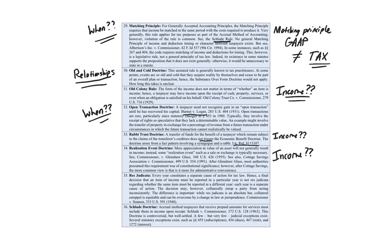Res judicata is a procedural question. Every tax year constitutes a separate cause of action for tax law; hence, a final decision that an item of income must be reported in a particular year is not res judicata regarding whether the same item must be reported in a different year. If the IRS says one thing in one year or misses it, the next year could be treated differently. The Schlutti doctrine is a 'when' question. Accrual method taxpayers that receive prepaid amounts for services must generally include the income upon the prepayment, because accrual method records income as it's earned. There are a few exceptions to this, but that is the general rule.